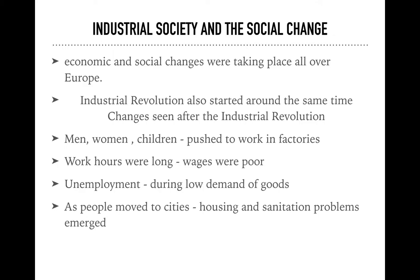The industrial revolution brought significant changes. Men, women, and children now started to work in factories. Earlier, most people in society lived by doing agriculture, but as industries started to grow, people shifted from agriculture to industries and started to work in factories to earn their living. However, in the factories, the working hours were very long, and on top of that, wages were very, very poor.